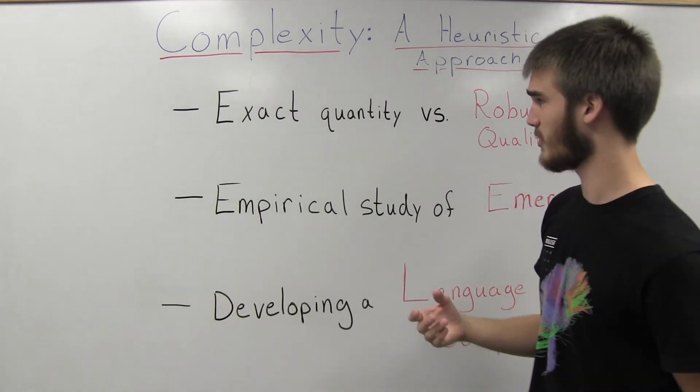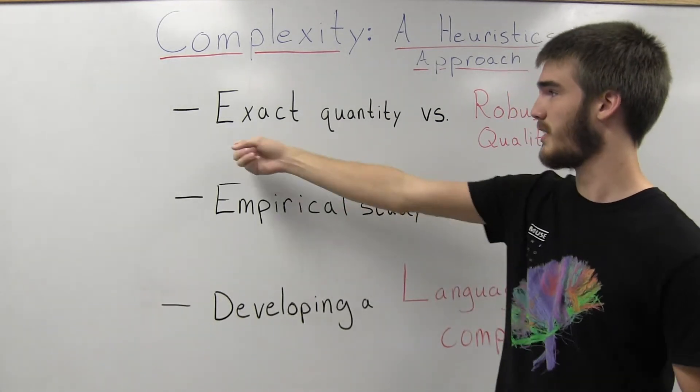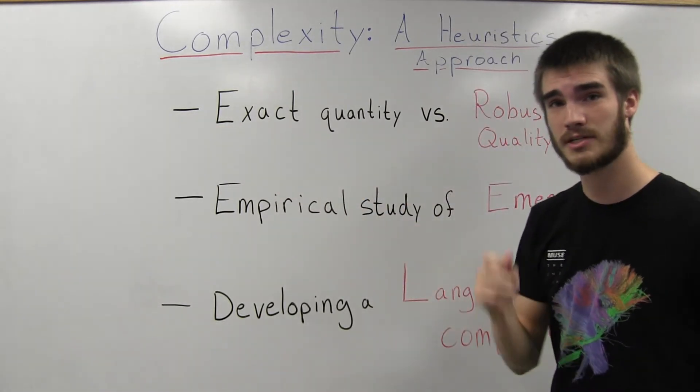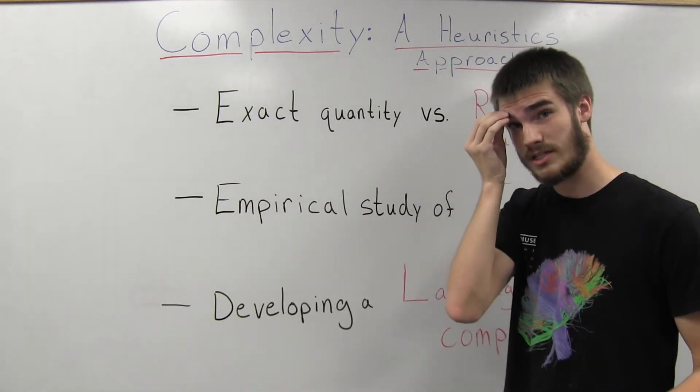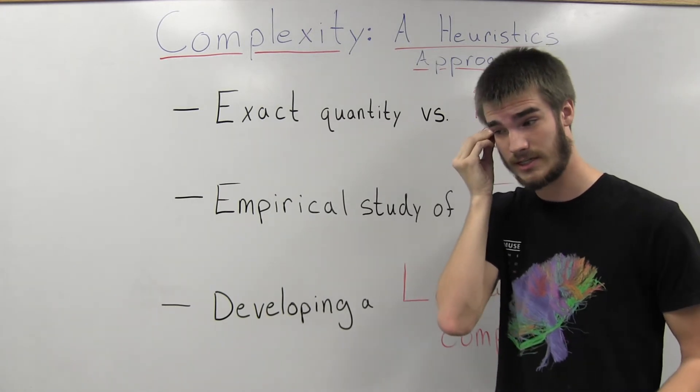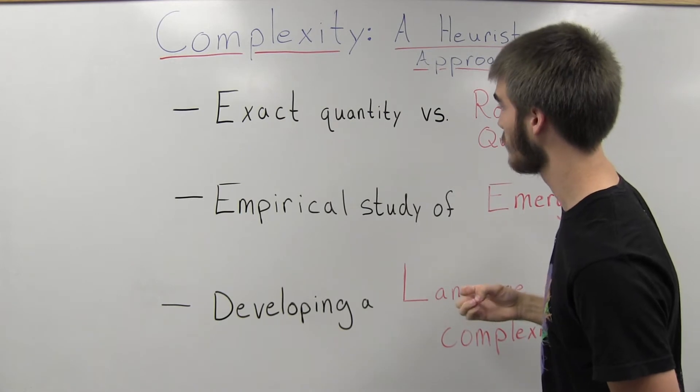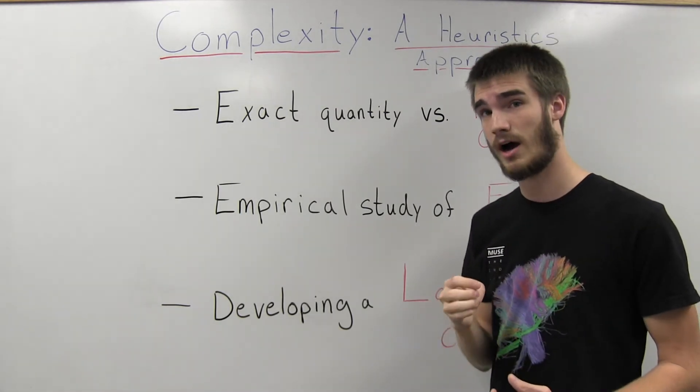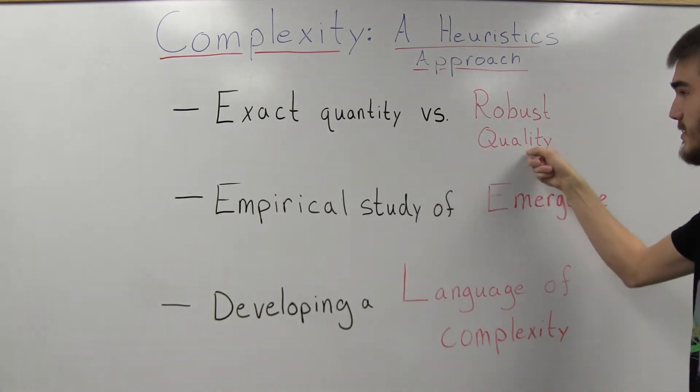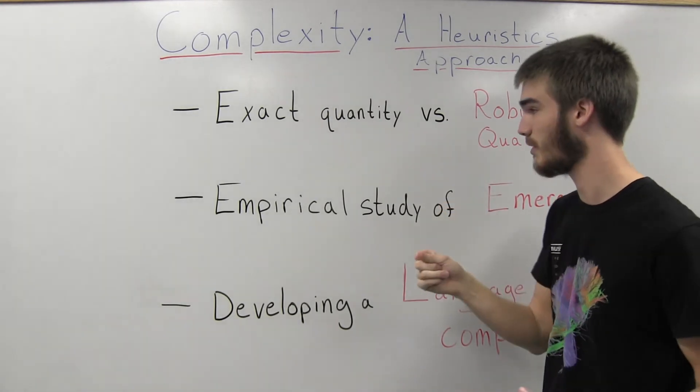What am I going to be talking about? In many of the physical sciences, we are obsessed with exact quantities. The problem with complexity is that exact quantities aren't quite as useful and they aren't quite as easy to get, mainly because there are usually a large number of variables in a complex system. So, what we will be looking at instead as an analog is the idea of a robust quality, which I will explain in a further video.